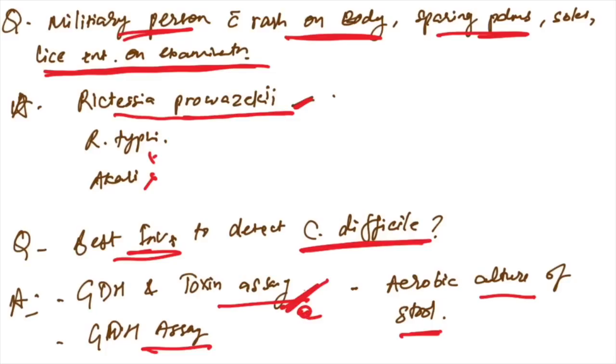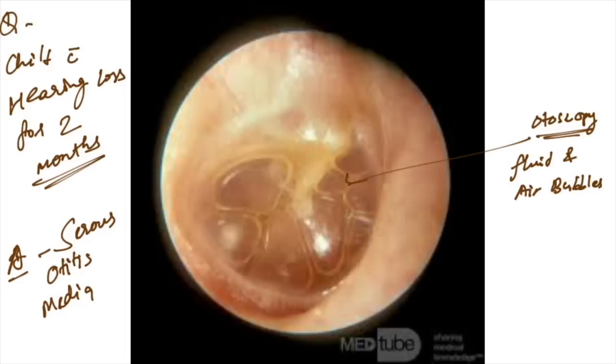Otoscope finding was given with history of child with hearing loss for two months. In otoscopic finding, you can see fluid and air bubbles. Fluid and air bubbles are seen in otoscopic findings of serous otitis media.